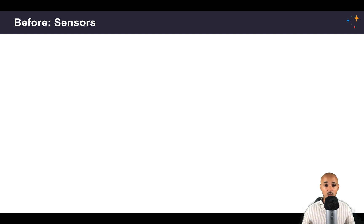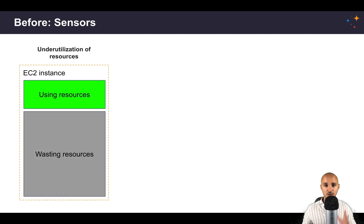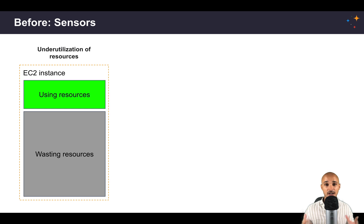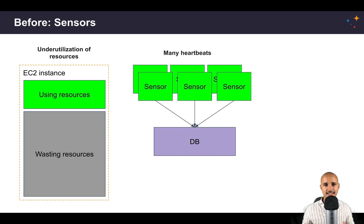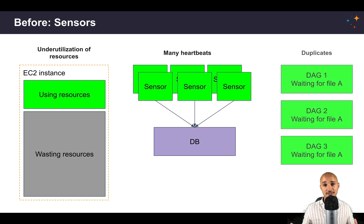There are three different problems with typical sensors. The first is the underutilization of your machine — most of the time your sensors do nothing except check for a condition every 60 seconds, yet they keep preserving worker slots, meaning you can't execute as many tasks as your resources allow, and ultimately you are paying for resources you're not fully using. The second problem is that every task in Airflow emits heartbeats, and with many long-running sensors in parallel, you end up with many requests sent to the Metastore, increasing its load. Finally, with typical sensors it's not uncommon to have duplicates — different DAGs with different sensors waiting for the same thing, wasting resources.